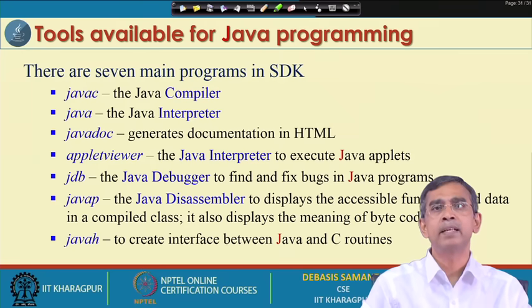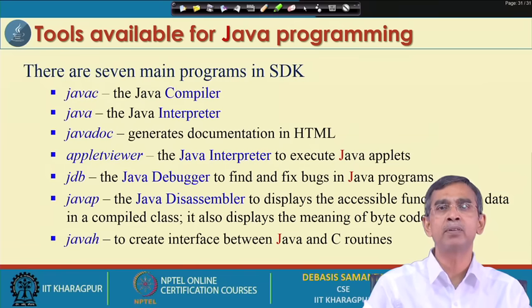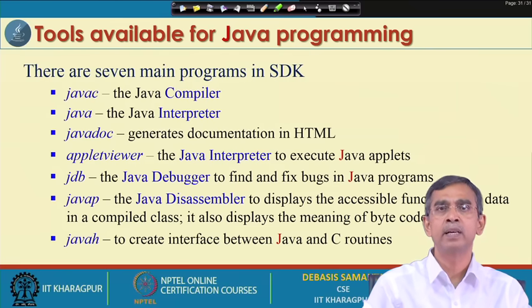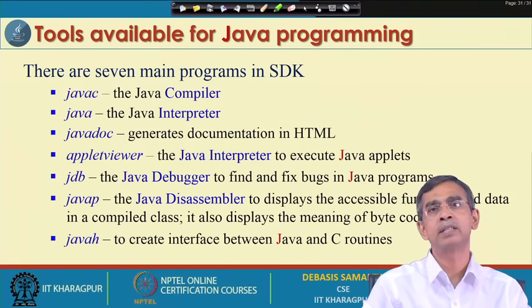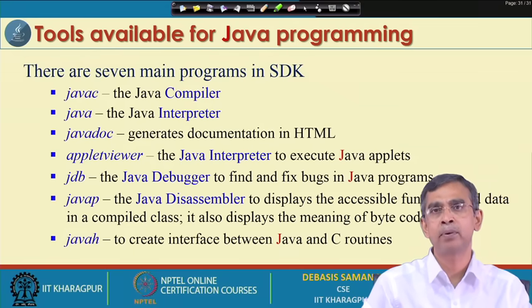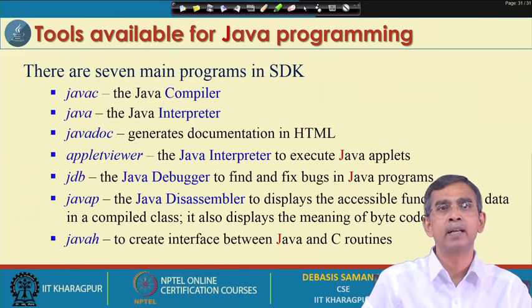The Java disassembler — javap — basically allows you to disassemble a very complex and large program into several component sets. Then javah is another facility included in JDK. It helps create an interface between Java and other programming languages, particularly C or C++ routines. If you want to develop part of a program in C and another part in Java, you can use javah to interface them so they can work together.